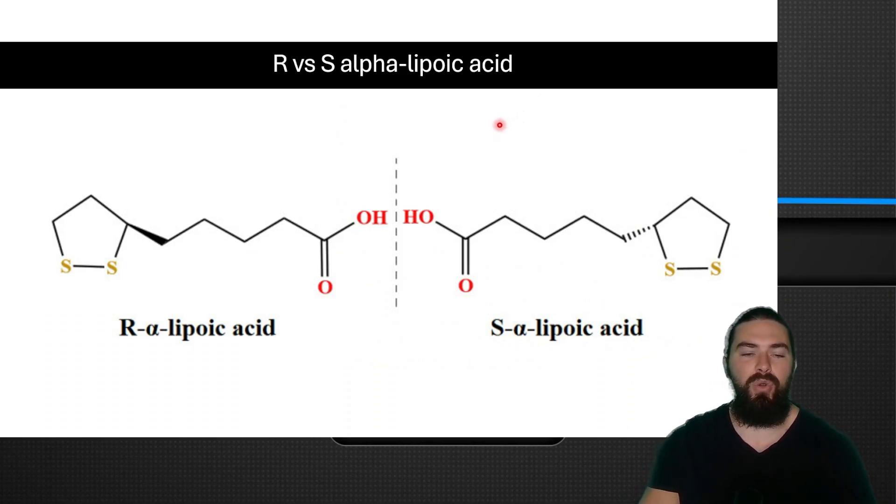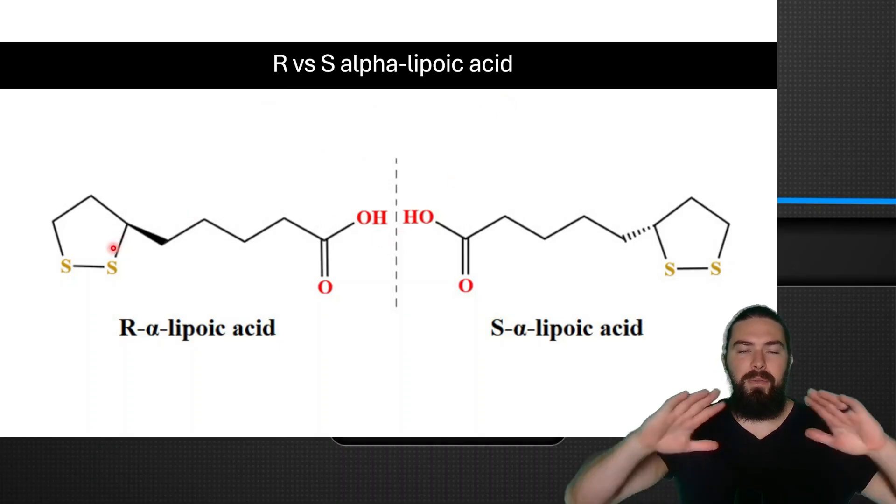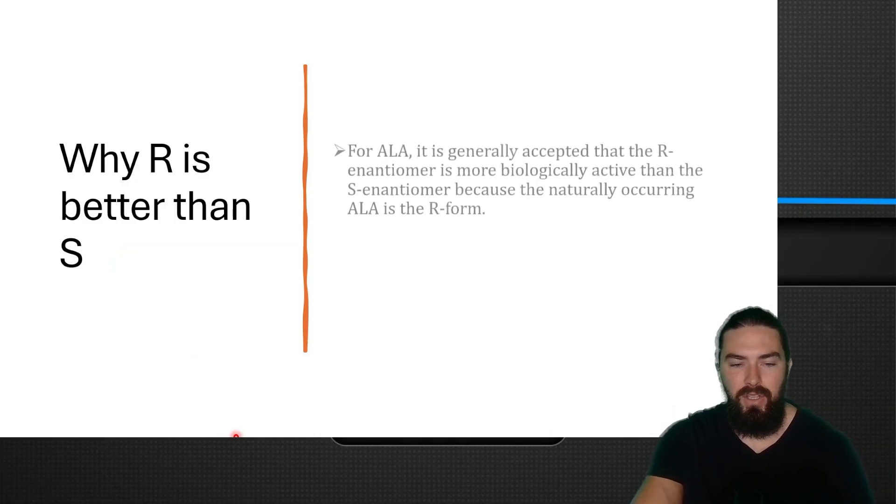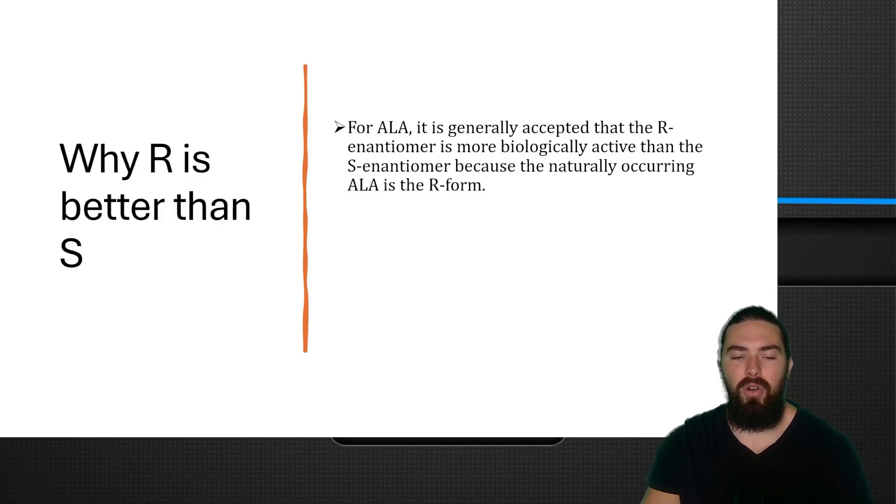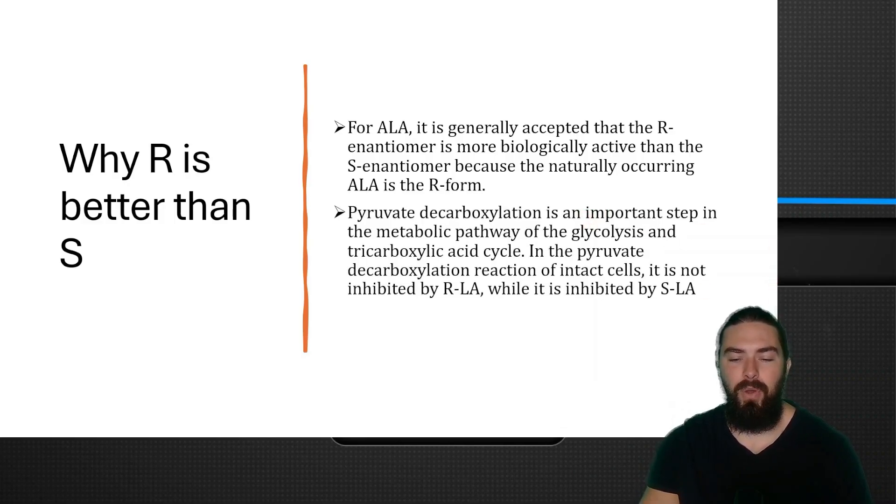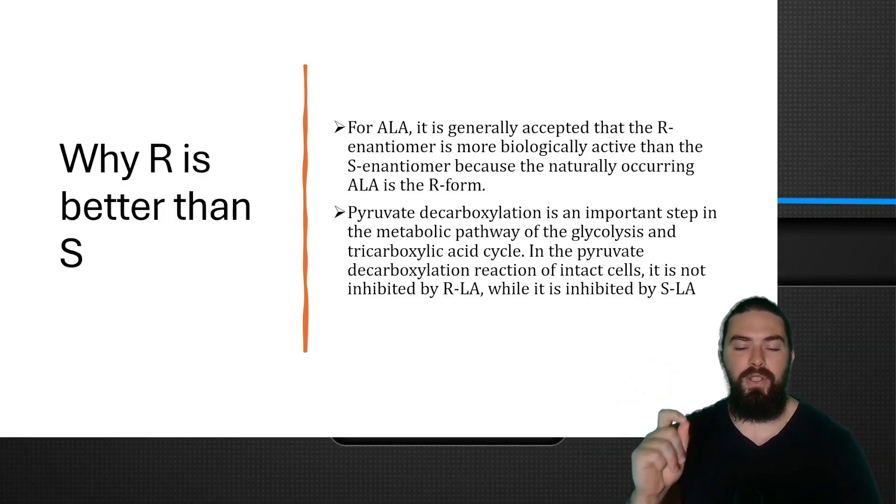We have two forms of alpha lipoic acid: the R and the S, and they're basically just mirror images—they look identical, they're just mirror images. This is why R is better than the S version. It's generally accepted that the R version is more biologically active than the S version because it is naturally occurring in nature in food. Pyruvate decarboxylation is an important step in the metabolic pathway of glycolysis and the TCA cycle, the Krebs cycle. In the pyruvate decarboxylation reaction of intact cells, it is not inhibited by R-lipoic acid while it's inhibited by S-lipoic acid. So this enzyme, pyruvate decarboxylation, is very important for energy production, and it seems that S-lipoic acid inhibits it while R doesn't. If you just buy any random lipoic acid on the market, it's probably going to be S unless they specify that it's R-alpha-lipoic acid.